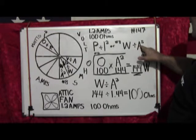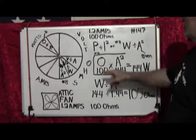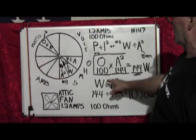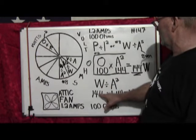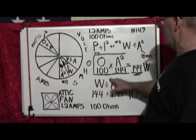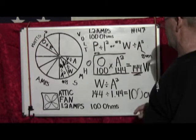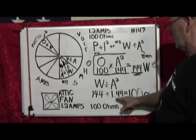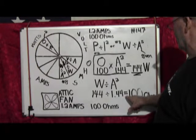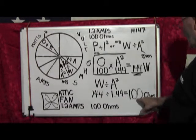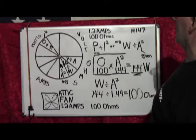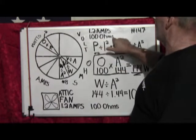So watts divided by amps squared is going to give us ohms. We came up with 144 watts divided by amps squared. 1.2 amps squared is actually just 1.44 amps. That gives us 100 ohms, which confirms that this formula works.